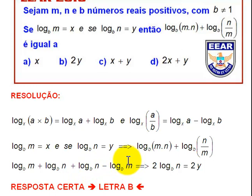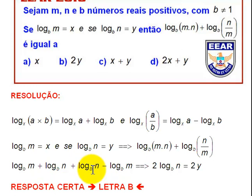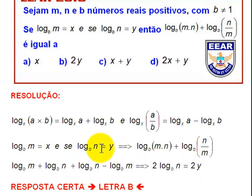Percebo que eu tenho menos log na base B de M com mais log na base B de M — isso vai desaparecer. Vou ficar com log na base B de N mais log na base B de N. Isso dá 2 log na base B de N, ou seja, 2Y. Por que 2Y? Lembra que ele falou que o log na base B de N era Y? Então, ficaria a minha resposta 2Y.